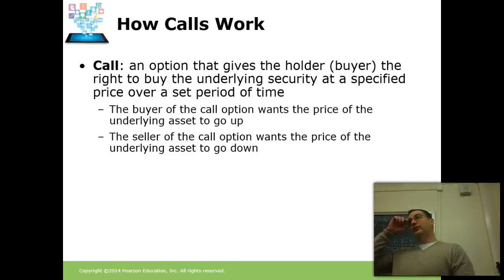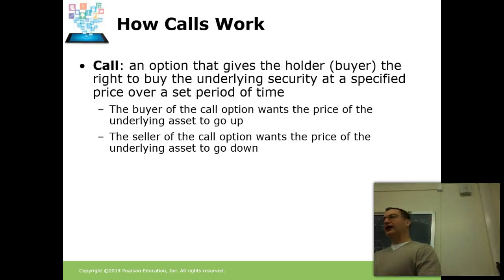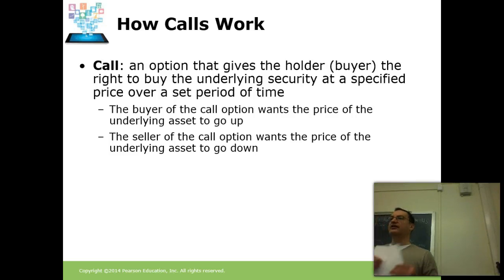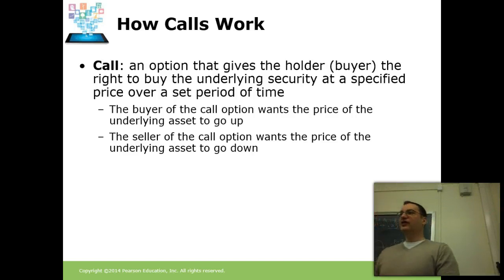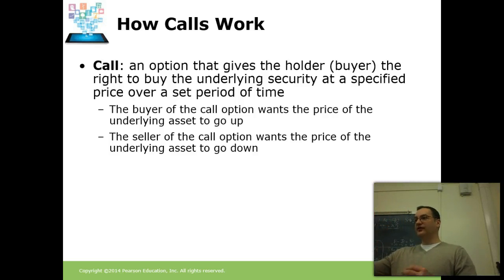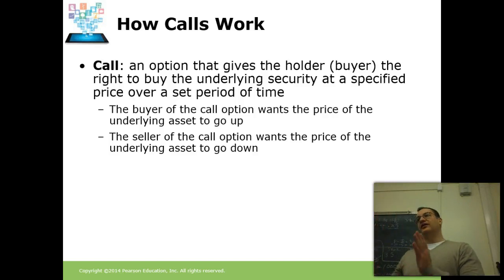A call option, which we're calculating today in class, gives the holder or the buyer the right to buy a stock at a certain price. Think of the option as a written contract that you sign at the bottom — the contract says you're going to pay for the right to buy a stock at a certain price. Because it's standardized through the exchange, you could go and sell it to someone else if you're done with it. The value of the contract changes as the value of the stock changes or as the time before expiration changes.